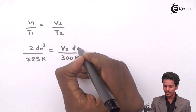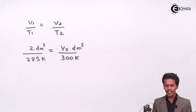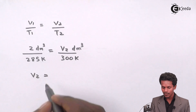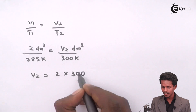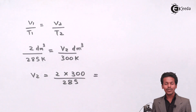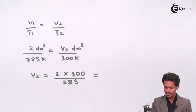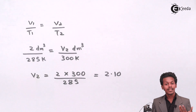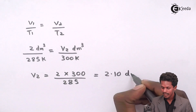We need to calculate the volume in dm³. By cross multiplication: V2 = (2 × 300) / 285. Solving this, we get the answer as 2.10 dm³. This is the final answer for the volume V2.